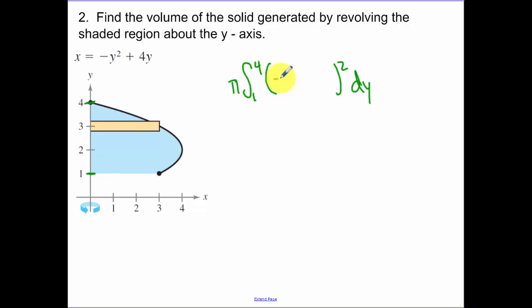Then we look at negative y squared plus 4y. Let's multiply all that out. We get a y to the fourth minus an 8y cubed plus a 16y squared dy.